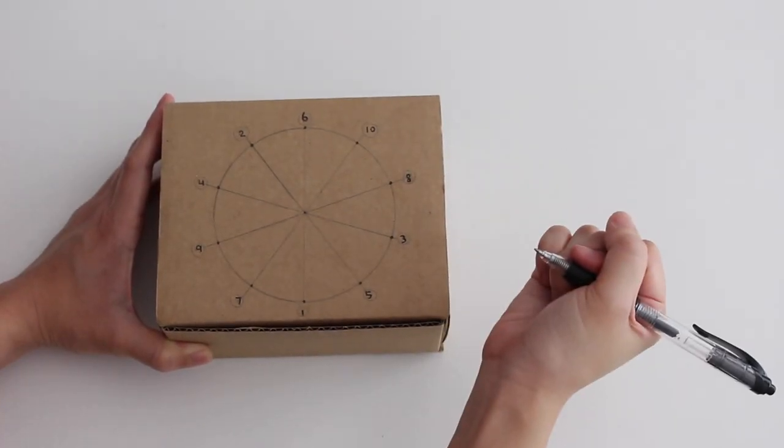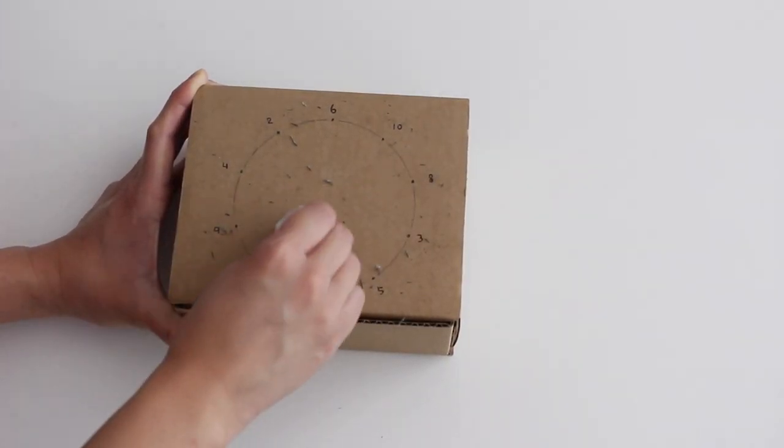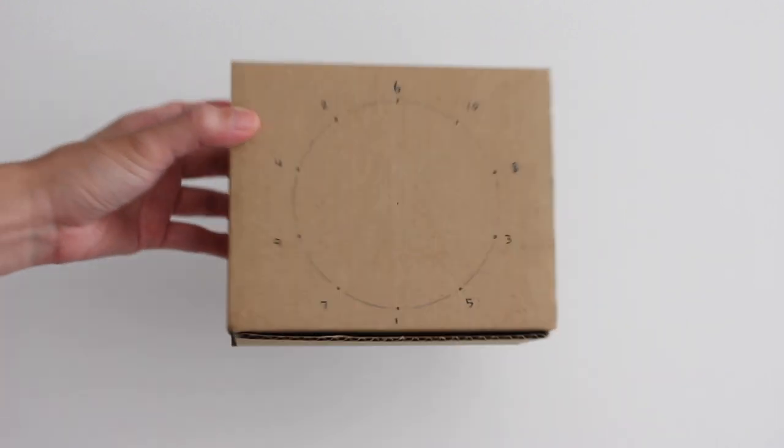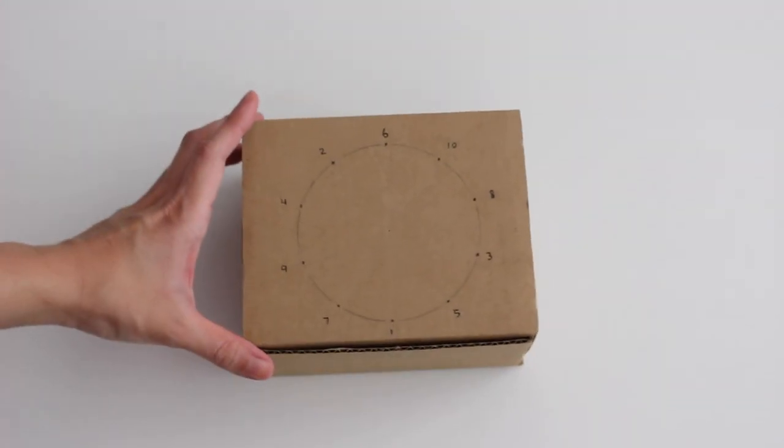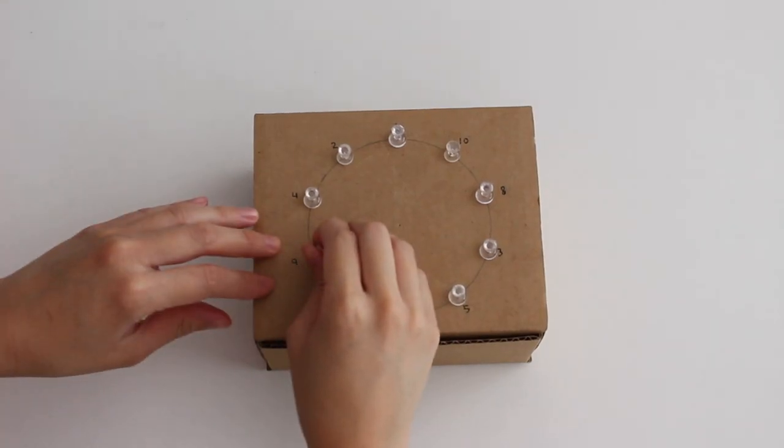I dotted and numbered the 10 sections like this. Then I erased the lines because they get confusing. Next, I added thumbtacks.